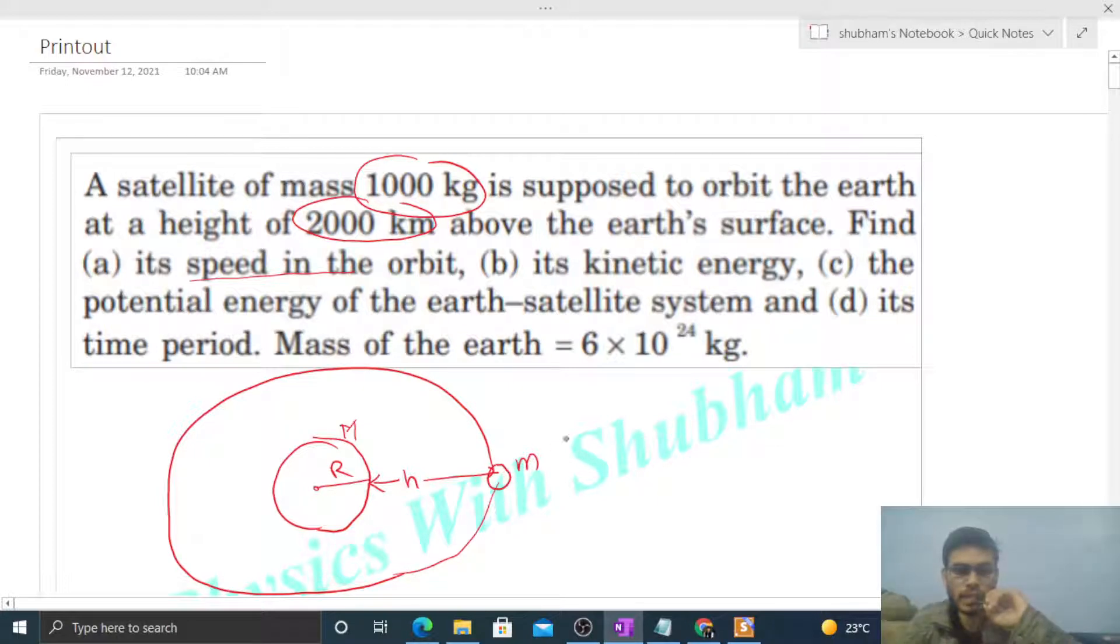Then the gravitational force of attraction on this satellite by the Earth will be capital G times capital M times small m divided by (R + h) squared.